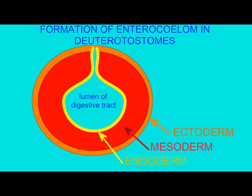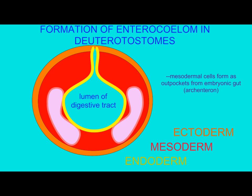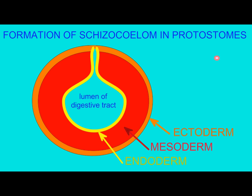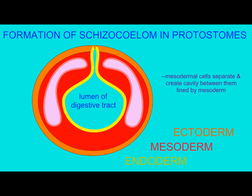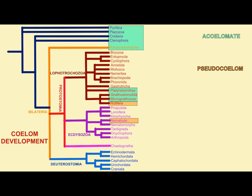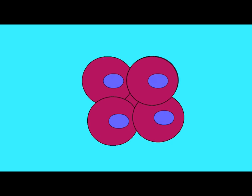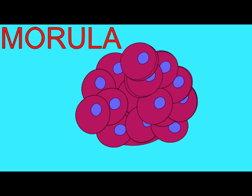A difference often used is the formation of the coelom, with deuterostomes having enterocele formation as opposed to the schizocele formation of the protostomes. But there are exceptions here as well, so not all enteroceles are deuterostomes.